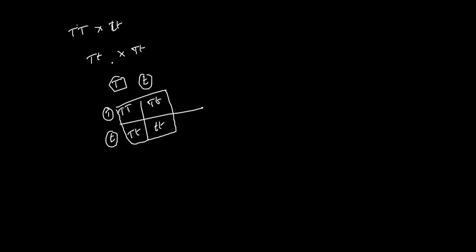In the monohybrid class, we calculate the capital T: 1, 2, 3, 4. Out of the total, there are 4 capital T — 1, 2, 3, 4 — giving us 4 by 8. So we calculate half plus half is equal to 1.